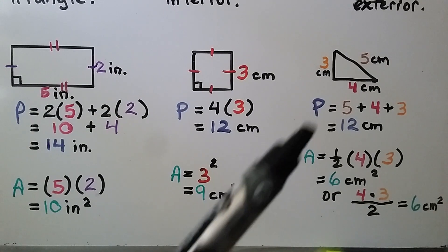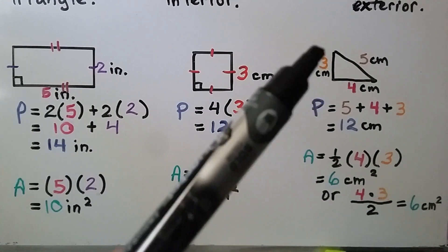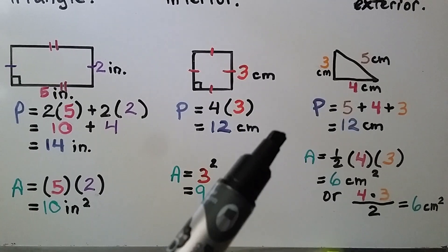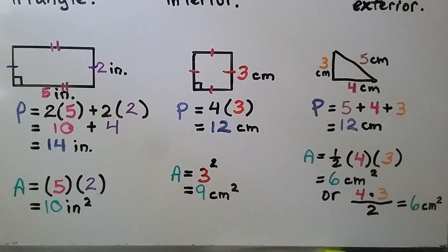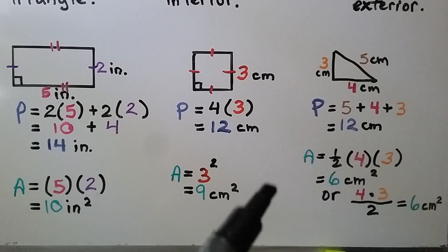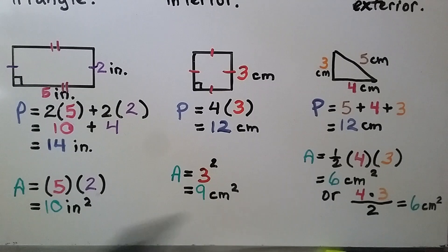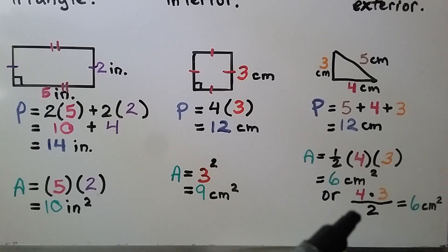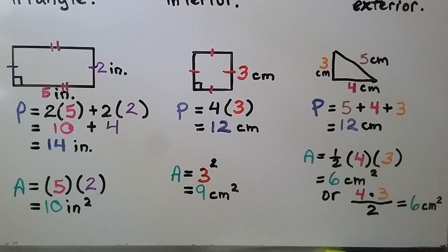For this triangle, it's a right triangle, and we know that one side is our height. We have a base of 4. To find the perimeter, we add the lengths of the sides and get 12 centimeters. For the area, we do half times the base times the height — base times height is 12, and half of 12 is 6 centimeters squared. We can also do base times height divided by 2: 12 divided by 2 is 6, so it's 6 centimeters squared.